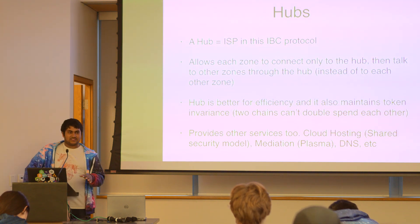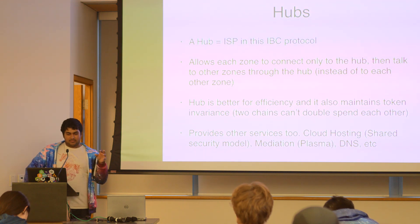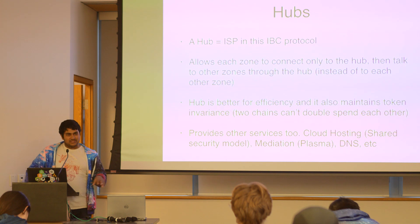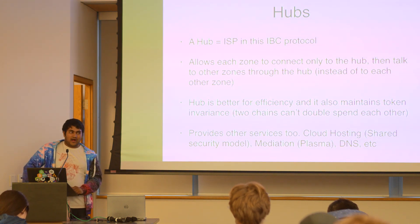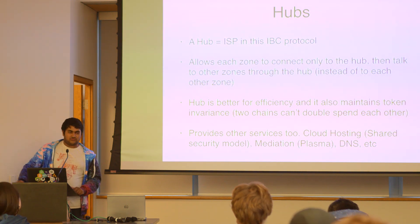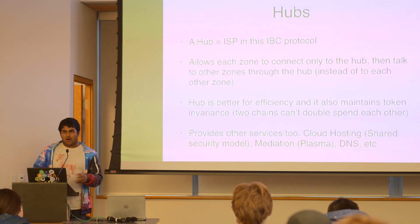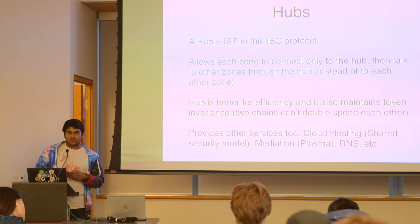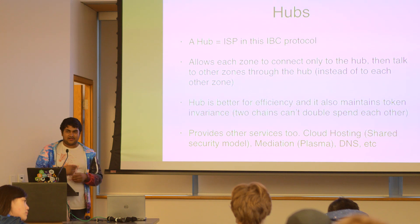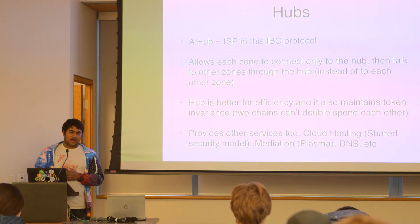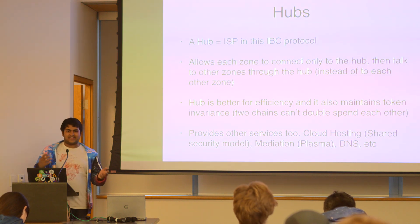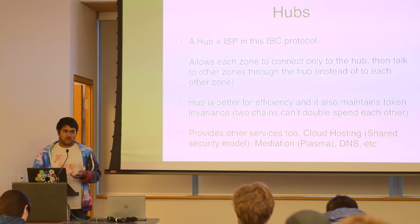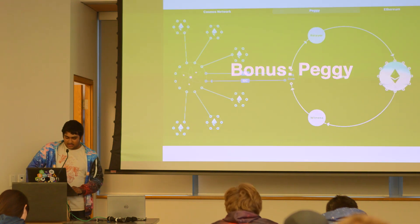This isn't necessarily centralization — the Cosmos hub and other hubs are supposed to be decentralized distributed systems. Hubs also provide other services, just like ISPs provide secondary services such as cloud hosting or DNS resolution. Over time these hubs will evolve to offer separate services as well — a hub may offer shared security, providing a validator set if you don't want to bring your own, or plasma functionality as an arbitration system, or DNS and identity systems. There will be competition between hubs to provide the best services.